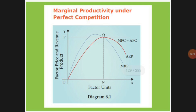Both should meet at the equilibrium point, which is point Q. Here MFC should be equal to MRP — that means expenses should be equal to profit. At point Q you achieve the maximum profit at price OP using ON units. Here MFC equals MRP, meaning all the factors of production meet at point Q. There is no exploitation of factors in perfect competition beyond the Q point.